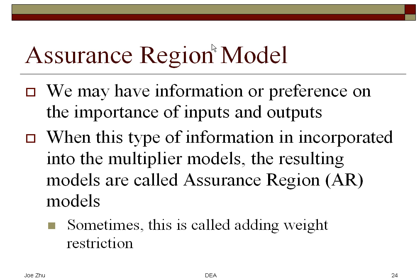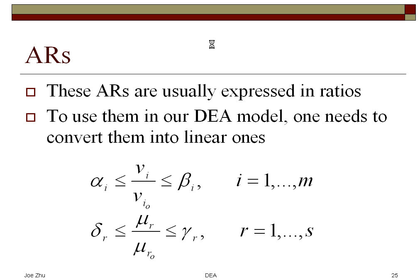The weight information you're going to add into the assurance region is shown here in standard form. You're looking at the standard form for the assurance regions. Alpha, beta, delta, and gamma are all given numbers. So you would look at the ratios of the input weights and the ratios of the output weights — you select one particular input and compare the multiplier weights of that input to all the other inputs. This is the typical assurance region format.